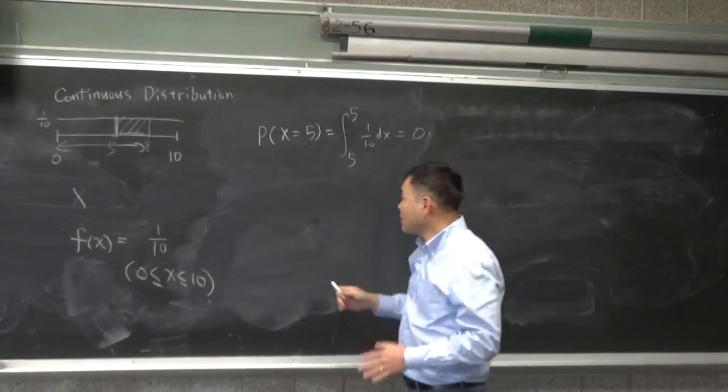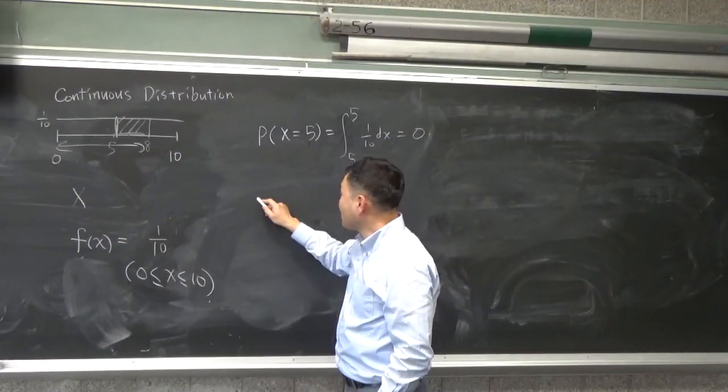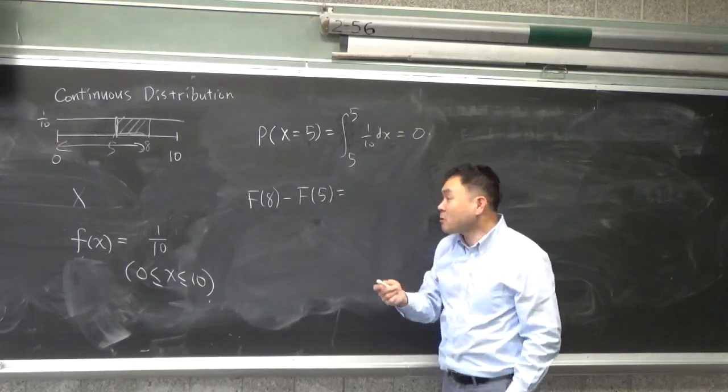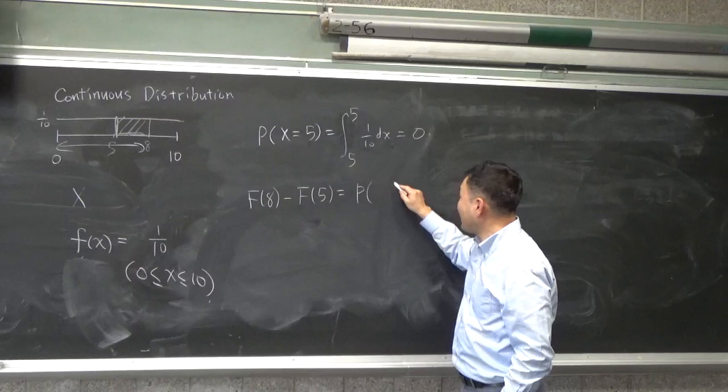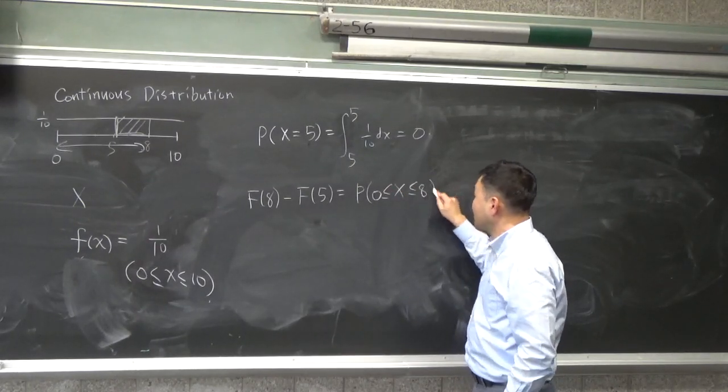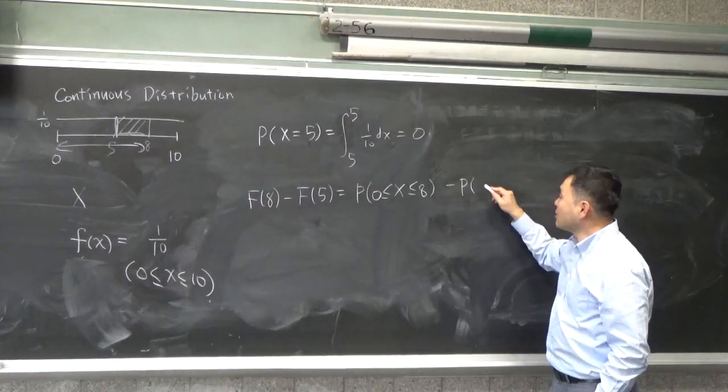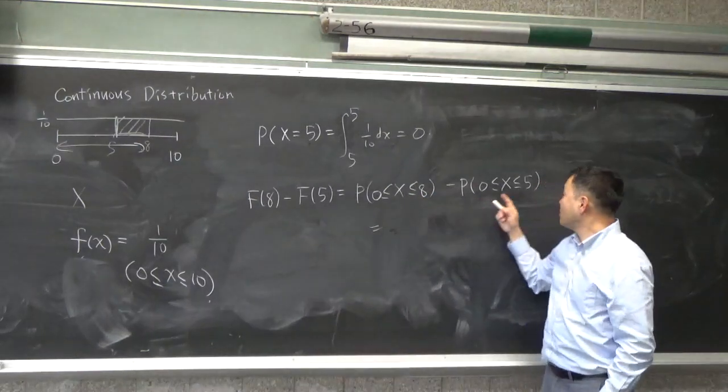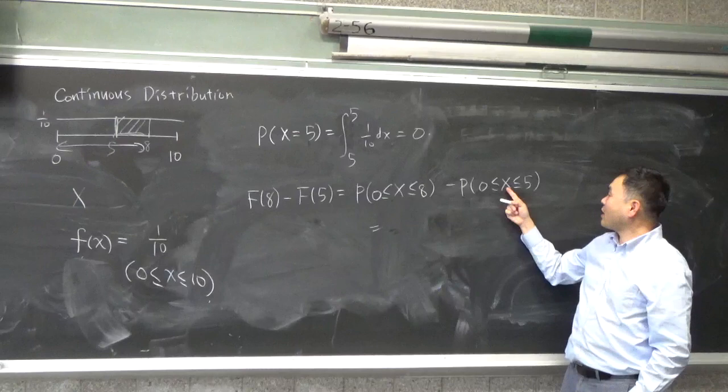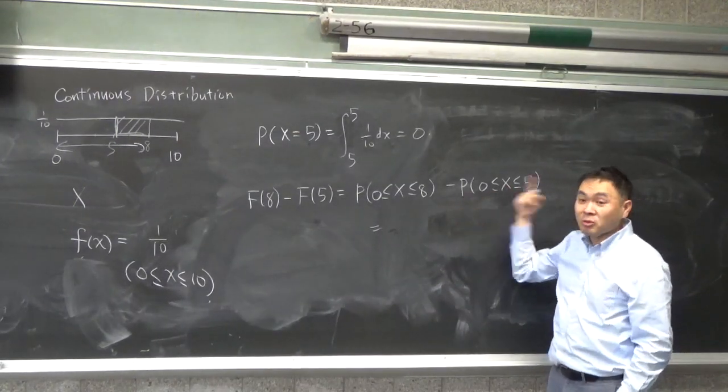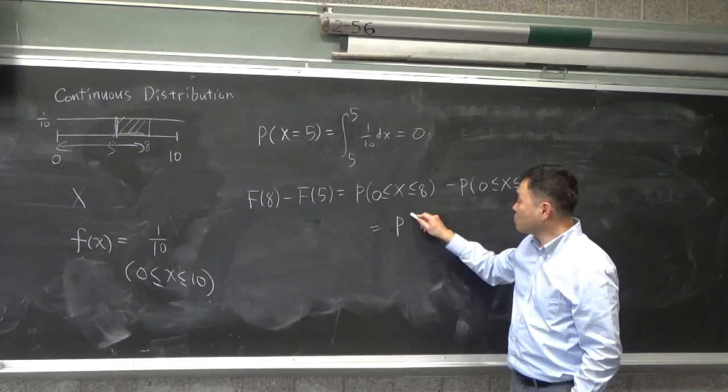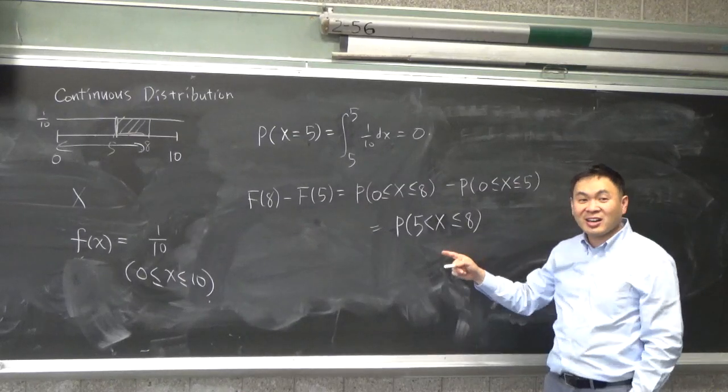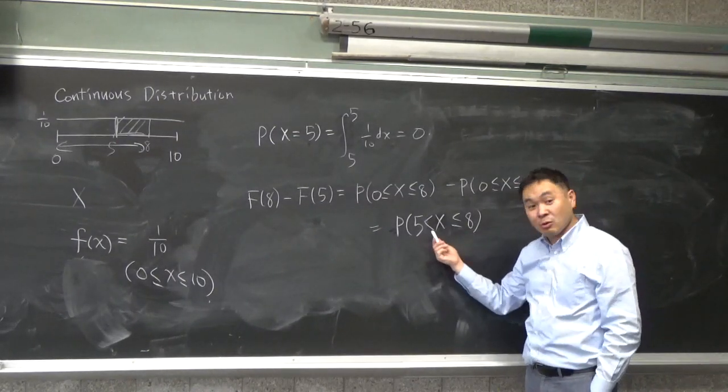So in my previous explanation, I was doing something like this. F of 8 minus F of 5, which perfectly, what does this mean? This is the probability that x is between 0 to 8, and you're subtracting probability of x being between 0 to 5. And because the case when x is exactly equals to 5 is being subtracted, this really calculates probability of x strictly greater than 5 and less than or equals to 8, which is kind of different from example 1. Example 1 has equality in there, right?